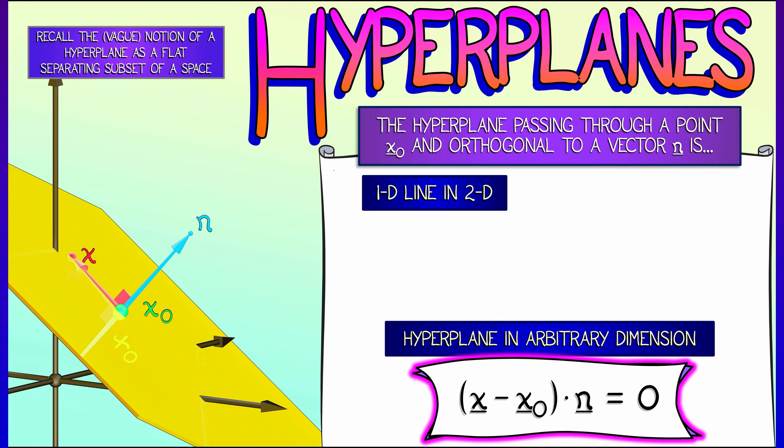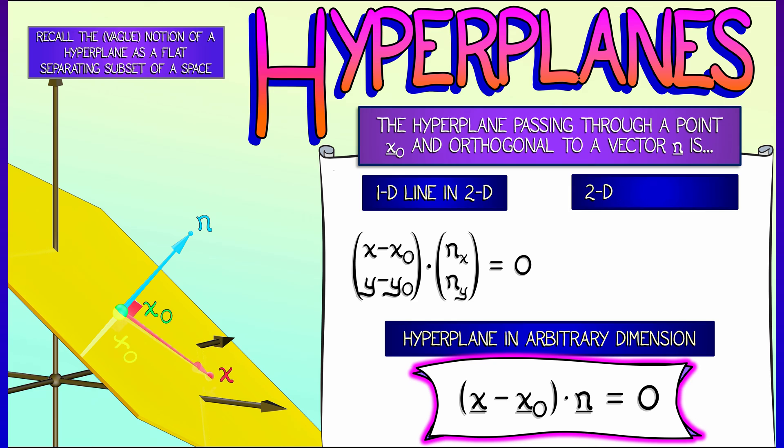For example, the formula for a one-dimensional line in 2D using that point-slope formula is really just the same thing as saying we're taking a dot product with this normal vector with components nx and ny.